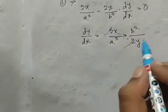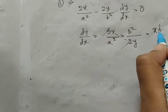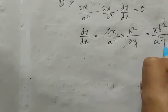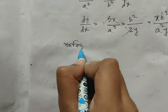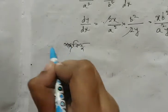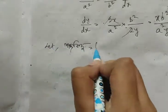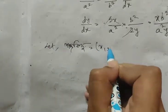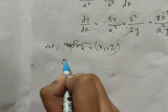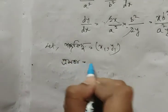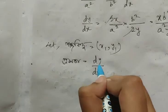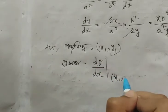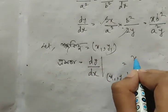এখানে দেখো — two two two two cancel হয়ে আসছে কি থাকছে এতে। এর পর আমরা এখন পাদু-বিন্দু ধরে নিয়ে পাবো অভিলম্ব। সেটা আমরা এদো হোন্দু ধরেছিলাম কিদো।